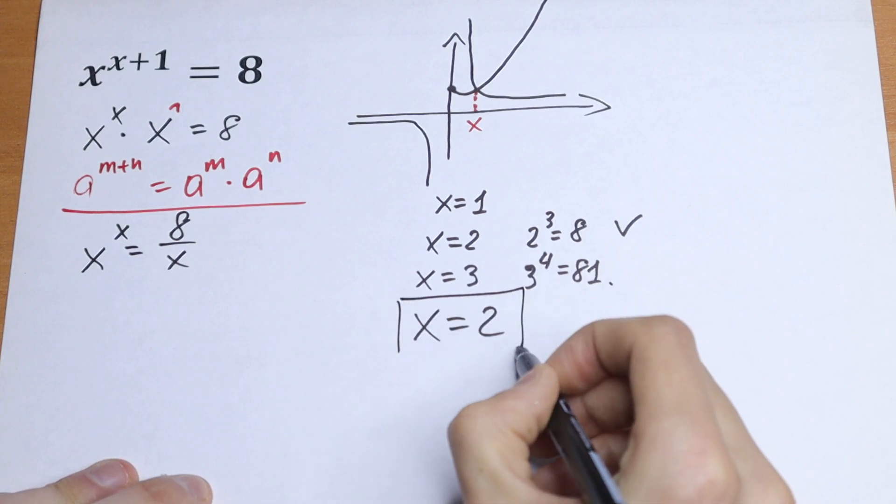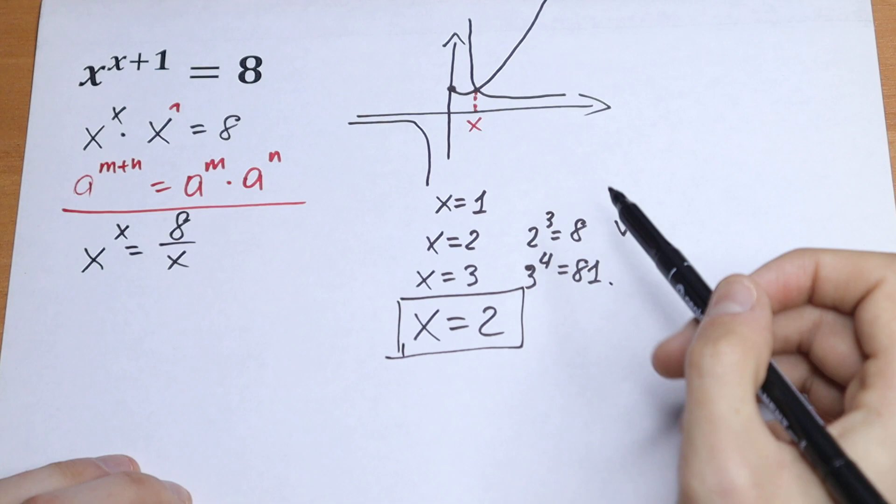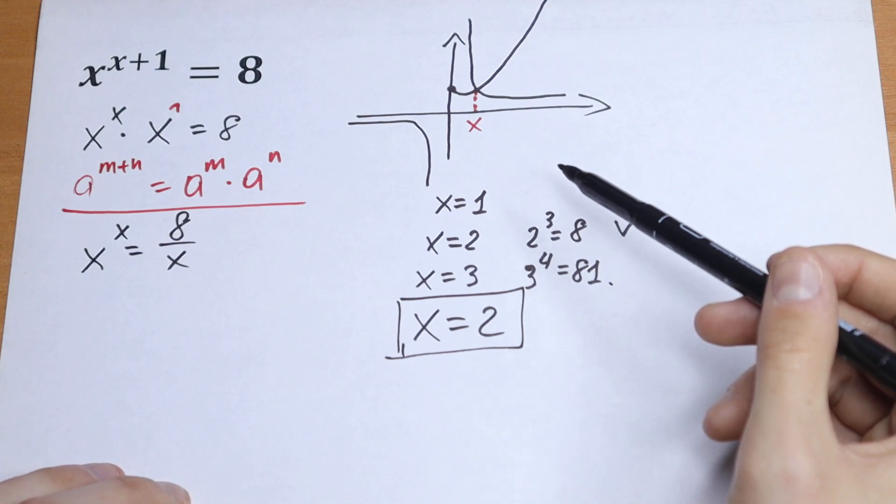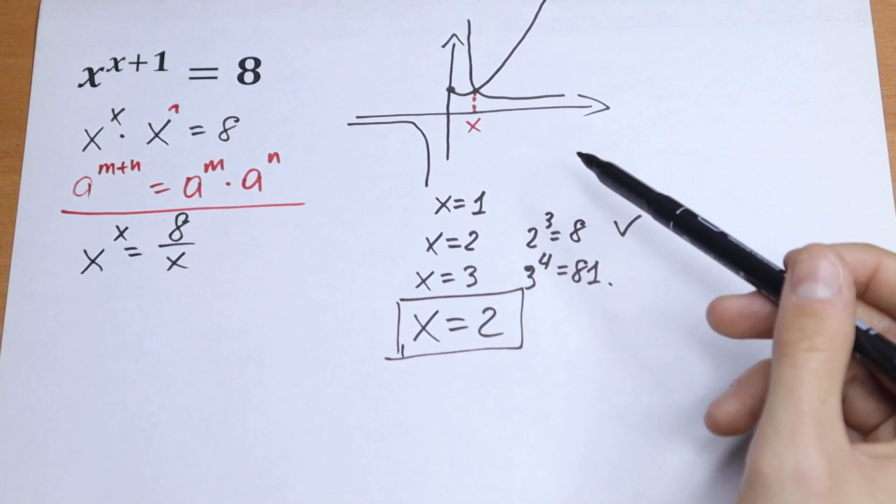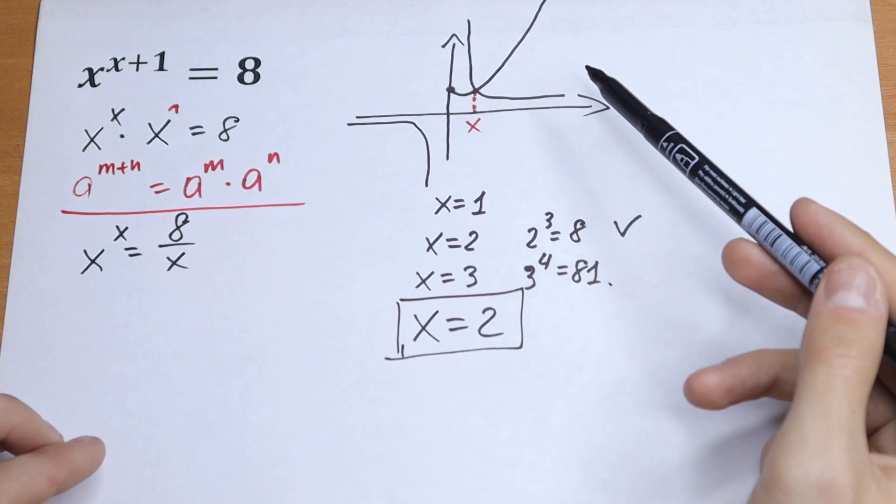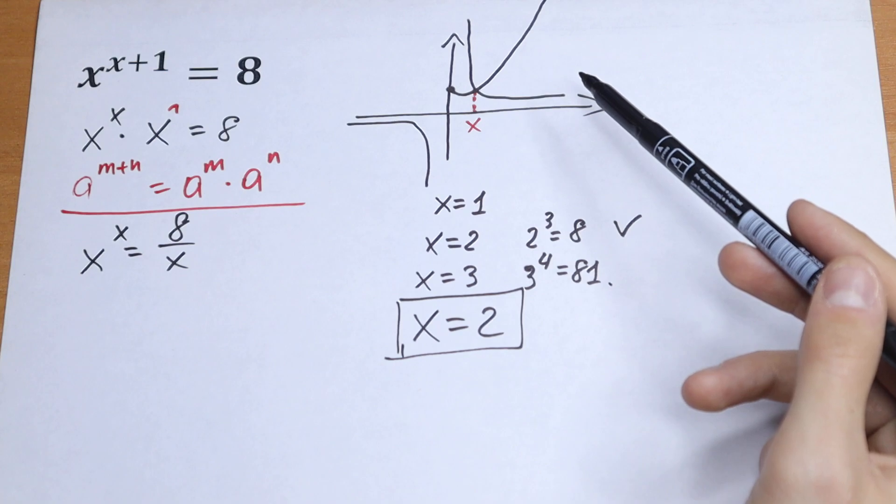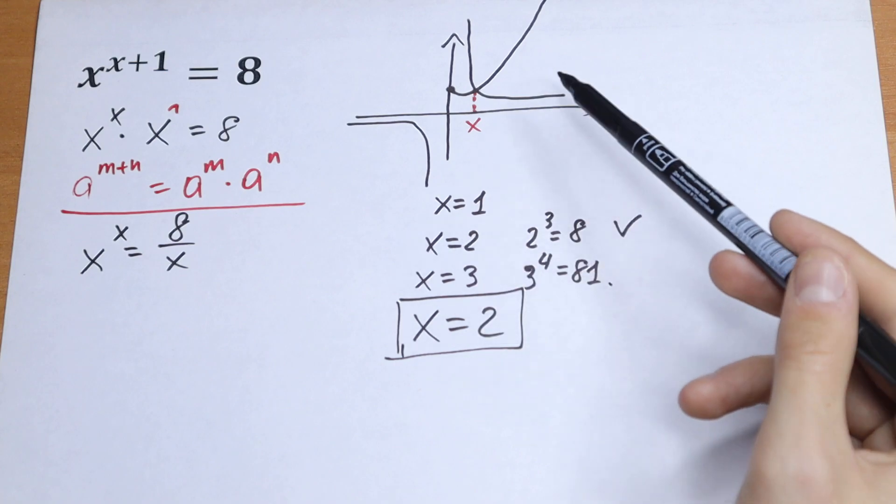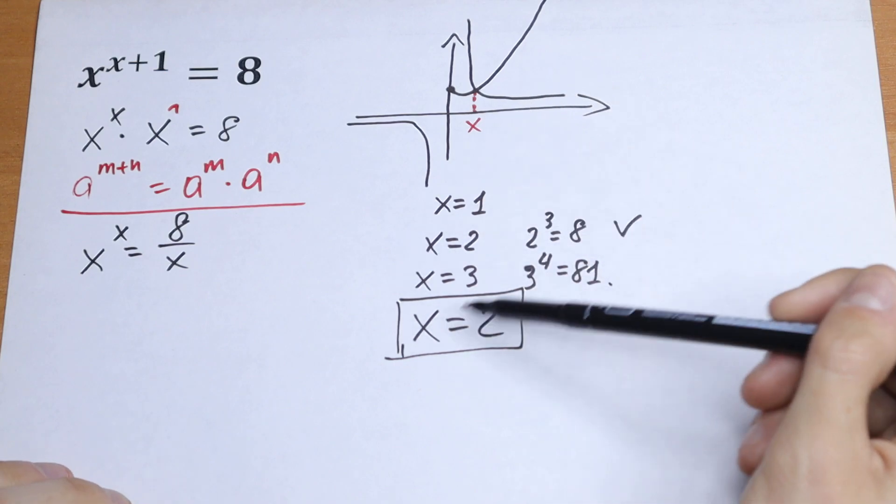This is so obvious solution, but this method is not a general method, it's not a good method. Because if we have, for example, x to the power x plus 1 equal to 19, we cannot find our roots using this method.